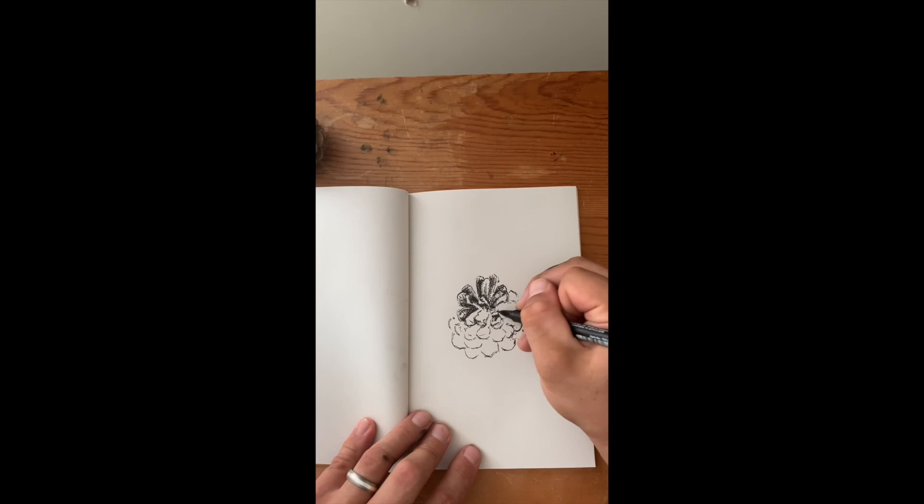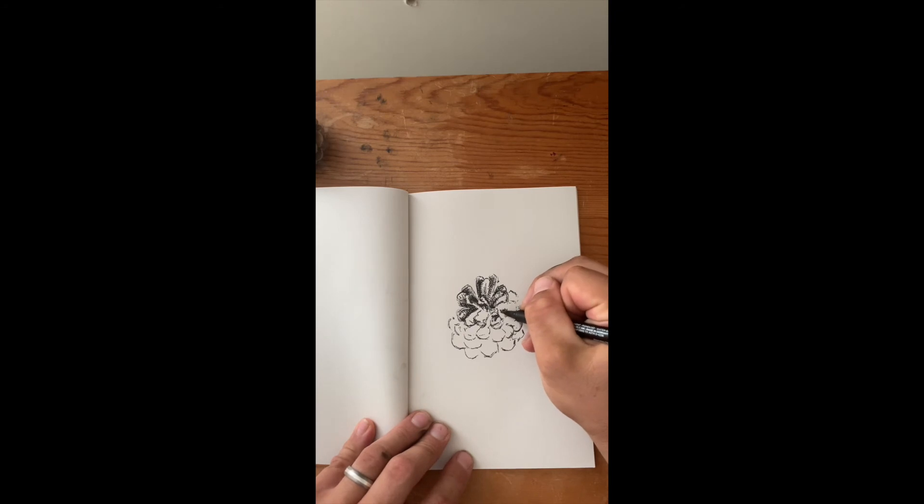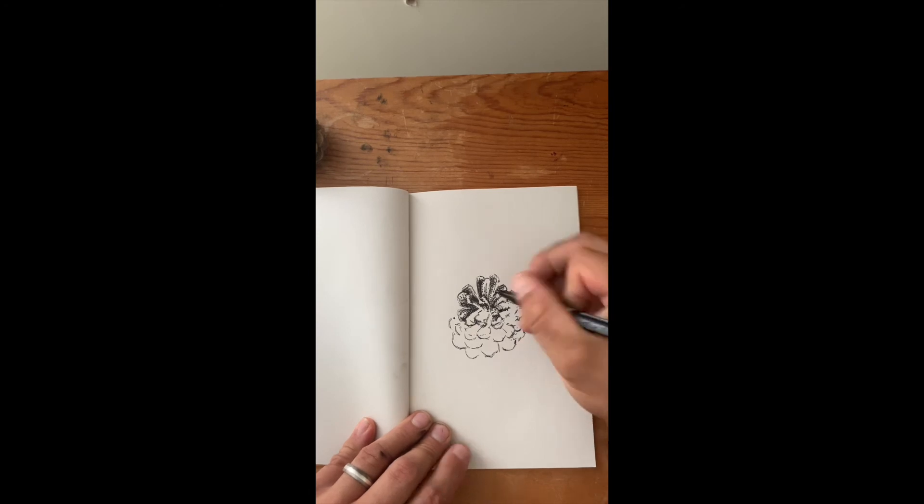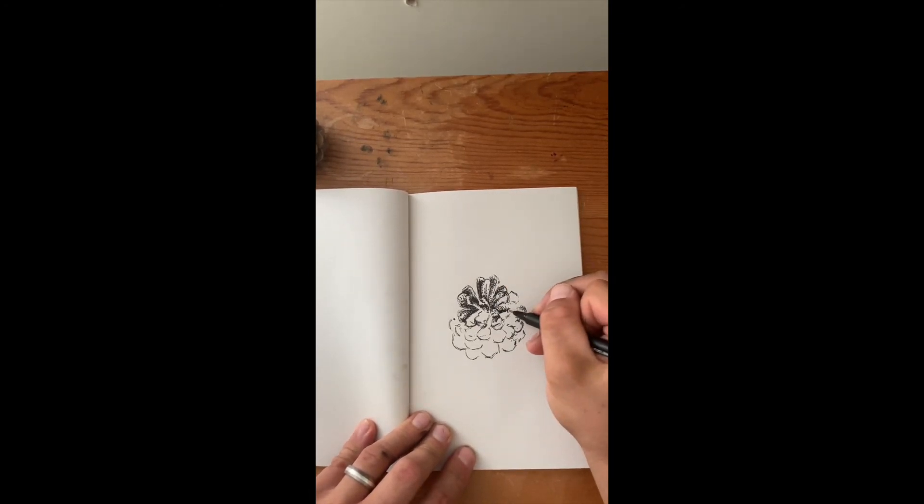So there you have an idea of some directional shading and how that can start to build in your form. You can start to build in your different pieces and really make your objects feel round and like they're sitting in space.